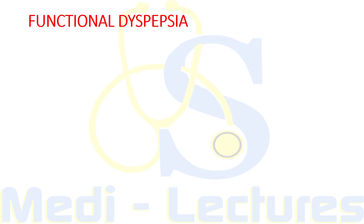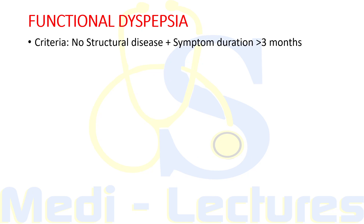Once organic causes are ruled out, we are left with functional dyspepsia. To recap the criteria: no structural disease on investigations including upper GI endoscopy, plus any one of the following — bothersome postprandial fullness, early satiety, epigastric pain, or epigastric burning — and this symptom duration should be more than three months.